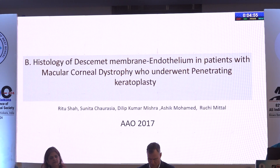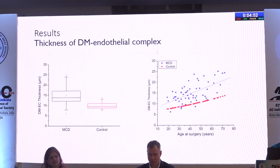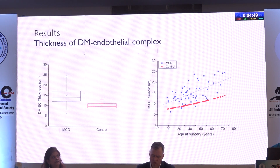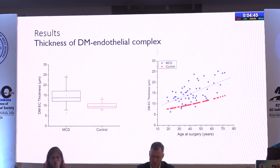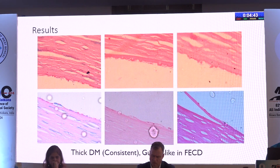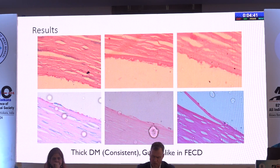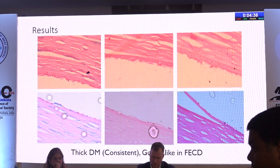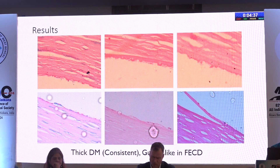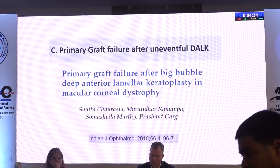We looked into the histology of the Descemet's membrane and endothelium in patients who underwent PK in the past. When we compared with normal corneas and cases with other indications where there was no macular corneal dystrophy, we see consistent thickening of Descemet's membrane in histology of macular corneal buttons. There are also guttae-like excrescences, just like what we see in Fuchs endothelial dystrophy.